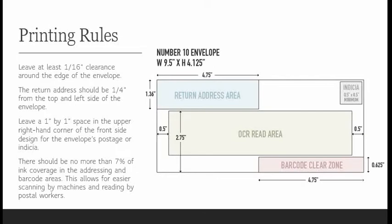The barcode needs maximum contrast so it can be printed and then scanned, so you don't want to have ink in that area or it will inhibit barcode scanning machines from reading it. The note says no more than 7% ink coverage in that zone — meaning if you look at the CMYK tint values, all those numbers can't add up to more than seven. For example, zero cyan, zero magenta, zero yellow, and seven black would be 7% ink coverage, or one cyan, two magenta, four yellow, and no black — that still adds up to seven.